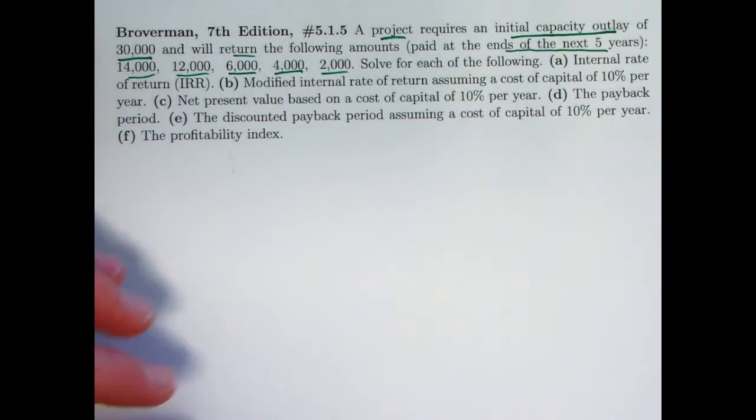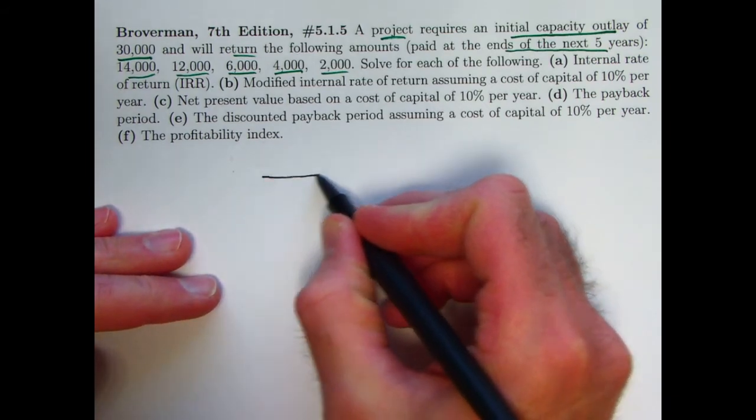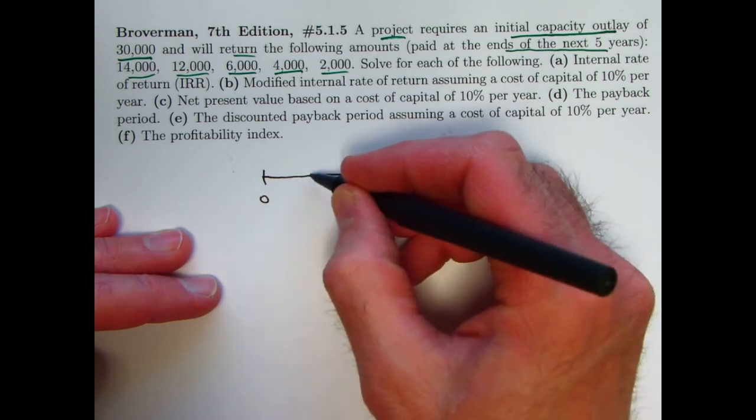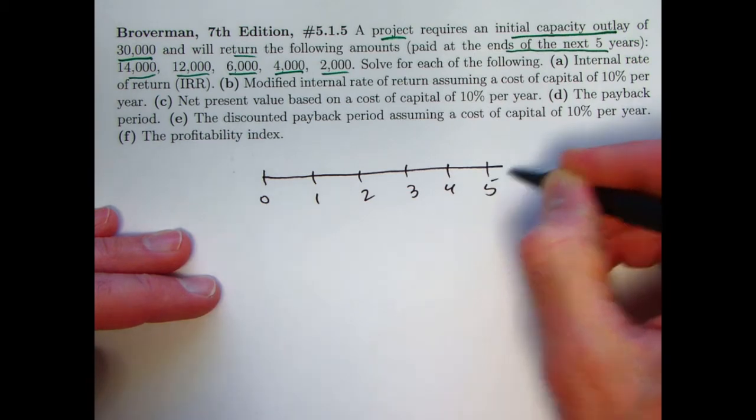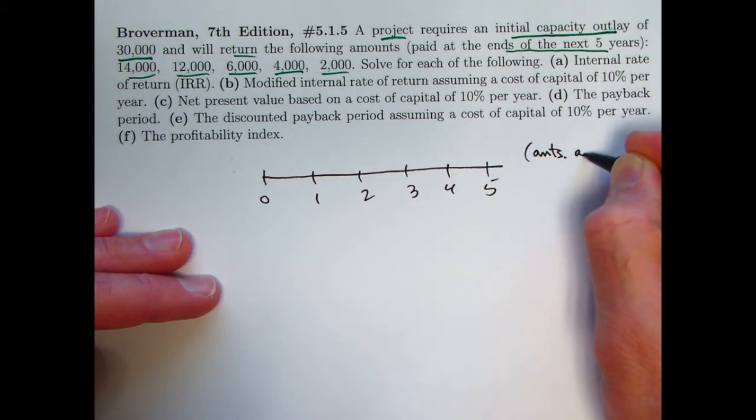And we're going to solve for various things. Before we highlight what those various things are, let's go ahead and draw our number line. Get that done right away. You've got time zero with the initial investment, 1, 2, 3, 4, and 5. The amounts are going to be in thousands.